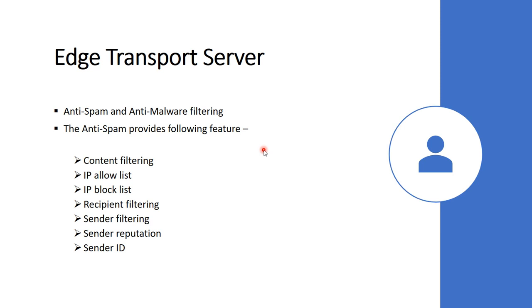You can install more than one Edge Transport Server in the perimeter network. This server handles anti-spam and anti-virus protection and includes the following features: content filtering, IP allow list, IP block list, recipient filtering, sender filtering, sender reputation, and sender ID.